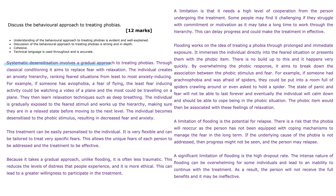Systematic desensitisation involves a gradual approach to treating phobias. Through classical conditioning, it aims to replace fear with relaxation. The individual creates an anxiety hierarchy, ranking feared situations from least to most anxiety-inducing. For example, if someone has aviophobia — a fear of flying — the least fear-inducing activity could be watching a video of a plane and the most could be travelling on a plane. They then learn relaxation techniques such as deep breathing. The individual is gradually exposed to the feared stimuli and works up the hierarchy, making sure they are in a relaxed state before moving to the next level. The individual becomes desensitised to the phobic stimulus, resulting in decreased fear and anxiety.